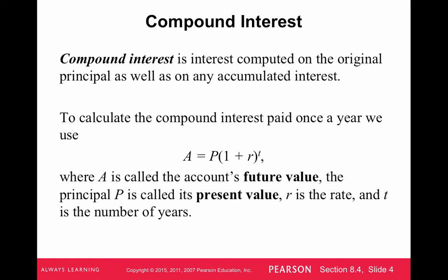To calculate the compound interest paid once a year, we use the formula A equals the future amount equals the principal times 1 plus the rate to the power of time, where A is the account's future value, P is the present value, R is the rate as a decimal, and T is the number of years. We'll look at this formula, but we're going to modify it a little bit in the next example and primarily use that modified formula.